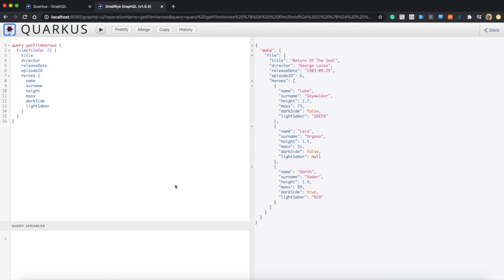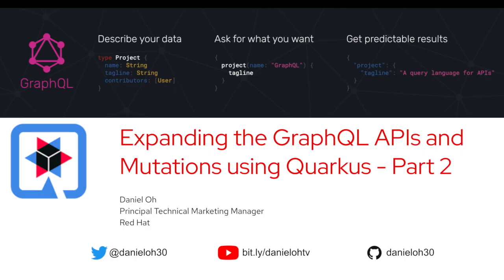This is very simple and easy to change your data. Let's wrap up this demo along with the previous one. GraphQL is a query language for APIs and a runtime for fulfilling those queries with your existing data. GraphQL is not a replacement for REST API — it's more of an alternative. With GraphQL, you can prevent over-fetching and under-fetching compared to just using REST. Quarkus provides a GraphQL extension for developers to use easily and quickly, including a GraphQL UI interface as well. Thanks for watching and have a good day.